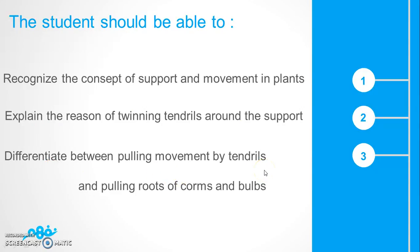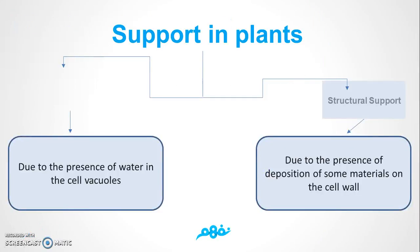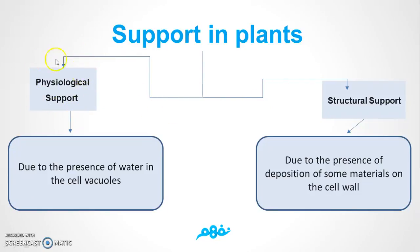The plant possesses different methods and systems for support, so as to maintain its shape and for protection. These methods may be physiological, concerning the turgor of cells, or structural, involving the possession of hard substances on the cell wall. Here we have physiological support due to the presence of water in the cells, and structural support due to the possession of some materials on the cell wall.